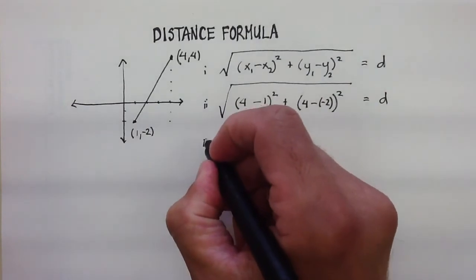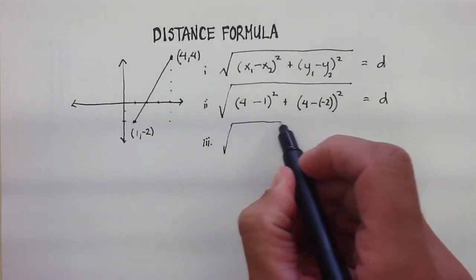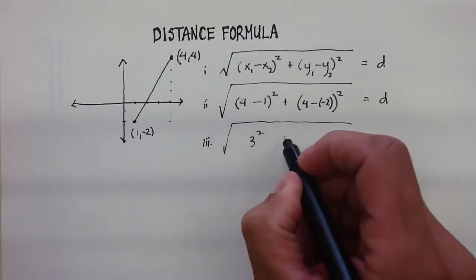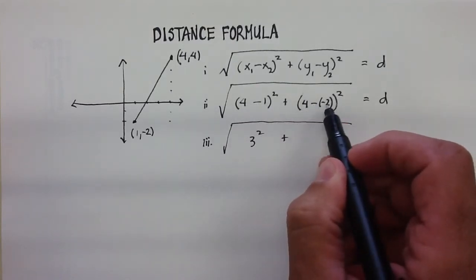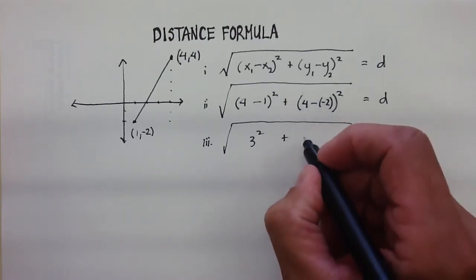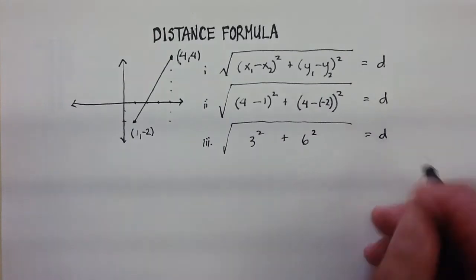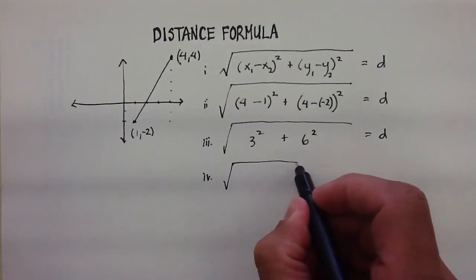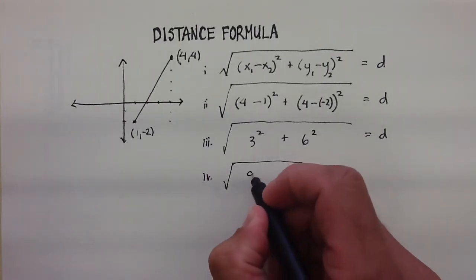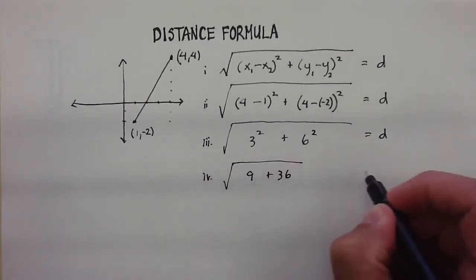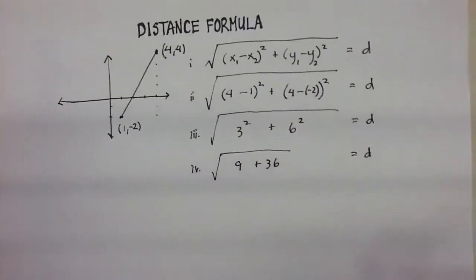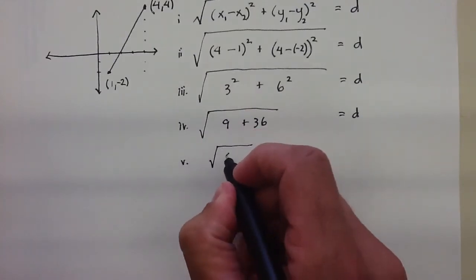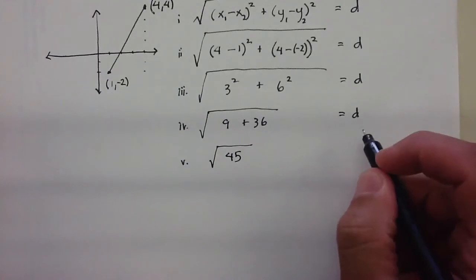Let's go ahead and work this out. I'm going to get the square root of 4 minus 1 is 3 squared, plus 4 minus a negative 2 makes that a positive, so that's going to be 6, quantity squared, is equal to the distance. Fourth step, that's going to be the square root of 9 plus 36. Again, that's equal to my distance, and that's going to be, last step, the square root of 45, because 9 plus 36.